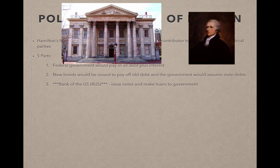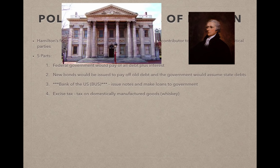The most divisive part of Hamilton's plan was his argument that it was constitutional because the Constitution did not forbid the creation of the BUS — a loose interpretation — whereas Jefferson took a strict interpretation and said no. Number four was an excise tax, a tax on domestically manufactured goods, most notably whiskey. Number five was a tariff, a tax on foreign goods.